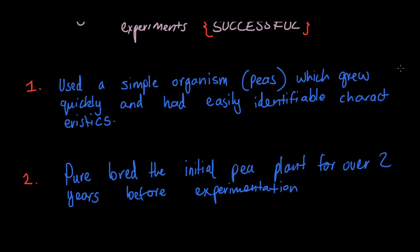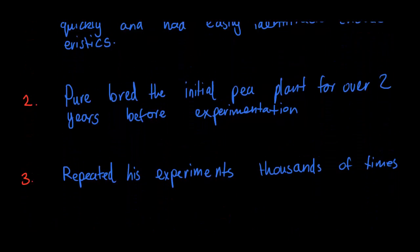Number two: he purebred the initial pea plants for over two years before experimentation. This allowed him to get accurate results — nothing done by error or by chance. Since he purebred and made sure these pea plants were 100% consistent in their characteristics, he was able to match these with the other characteristics he found.